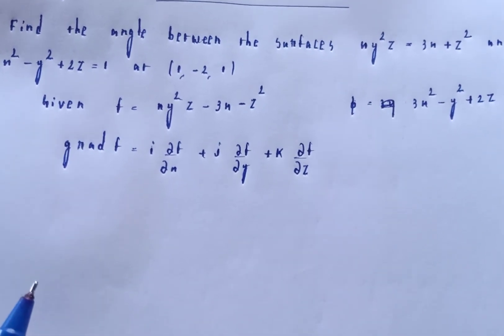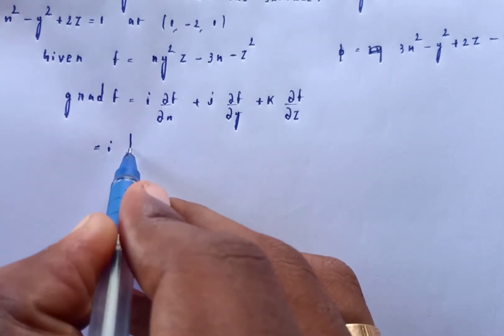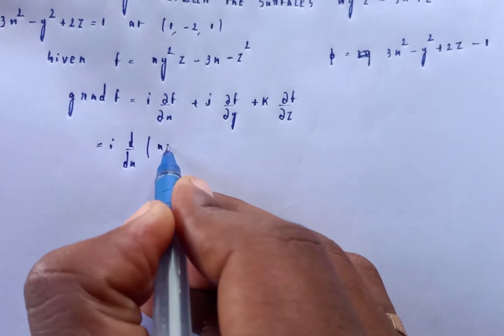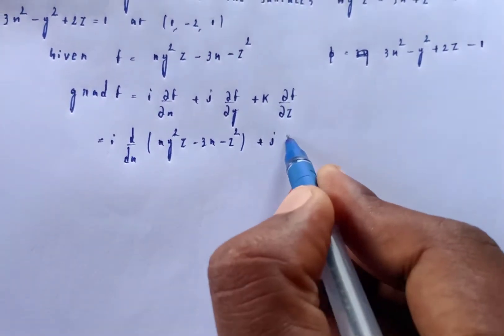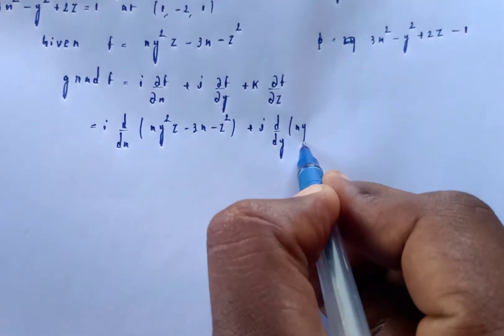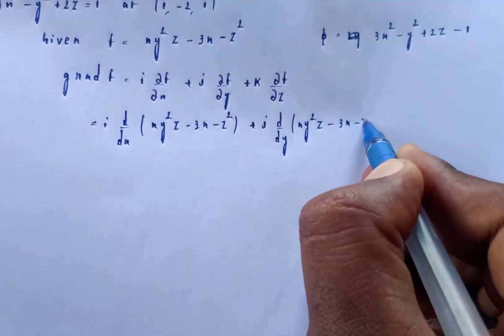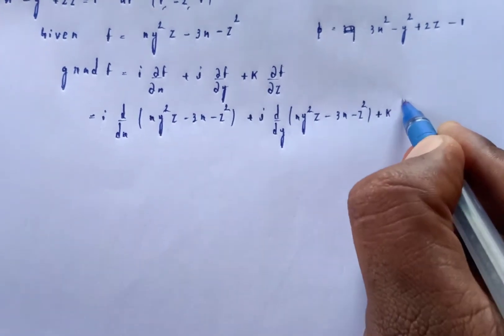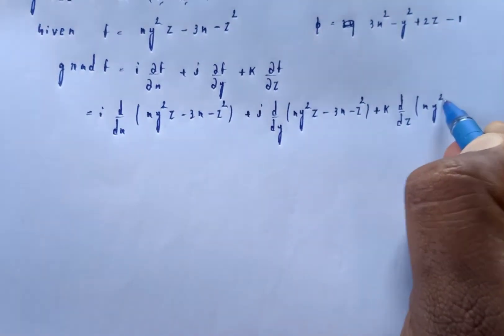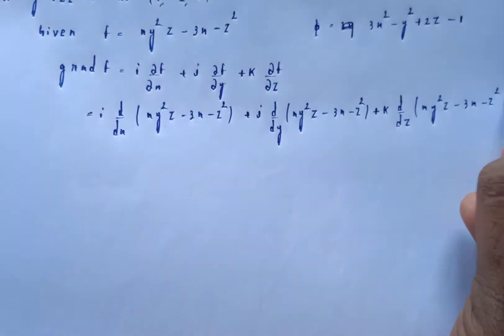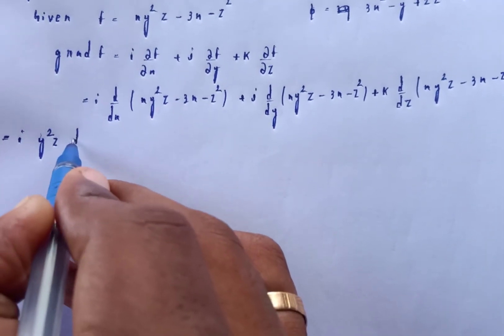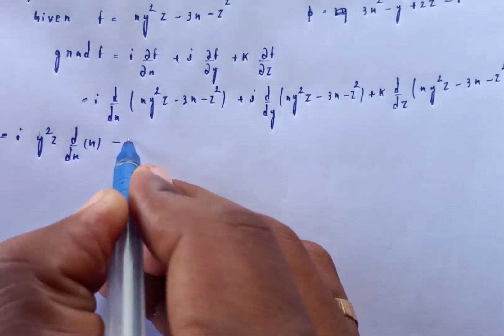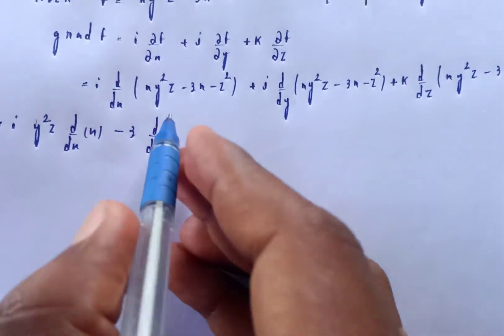Now we calculate grad F1. We need to find the gradient of F1 = xy²z - 3x - z². So grad F1 = i·(∂/∂x)(xy²z - 3x - z²) + j·(∂/∂y)(xy²z - 3x - z²) + k·(∂/∂z)(xy²z - 3x - z²).